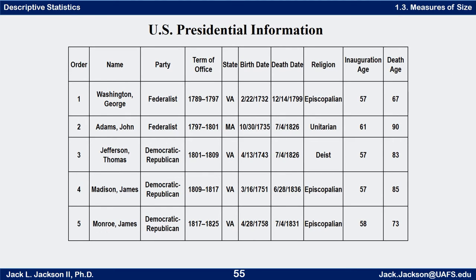Here it is. You can see it's organized in a table. We have a title at the top — U.S. Presidential Information. We have the order that they were elected, and of course this is only the first part of the table for the first five entries: first, second, third, fourth, and fifth Presidents. This is their name — last name comma first name — George Washington, John Adams, Thomas Jefferson, James Madison, and James Monroe for the first five. It has their party.